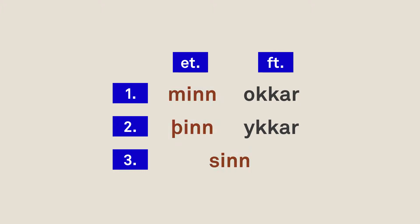What's different about these three — mín, þín, and sín — is that they decline for gender, number, and case. So they behave a lot like adjectives, which is why we call them possessive adjectives in this context.